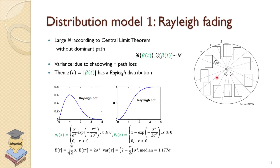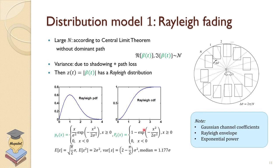The Rayleigh PDF is f(x) = (x/σ²)·exp(−x²/2σ²) for x ≥ 0, and the CDF is 1 − exp(−x²/2σ²). The expected value is √(π/2)·σ, E[z²] = 2σ², and the variance is (2 − π/2)σ². The median is 1.177σ. Rayleigh distribution arises from uncorrelated uniform scattering with no dominant path. To summarize: complex Gaussian channel coefficients lead to Rayleigh envelope amplitude, and squaring the amplitude gives exponentially distributed power.